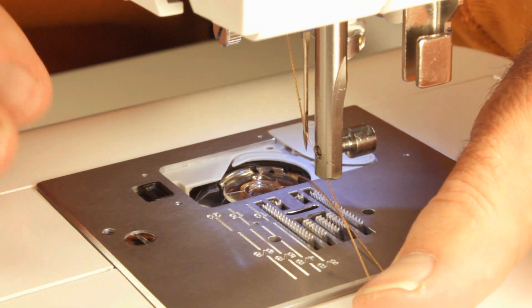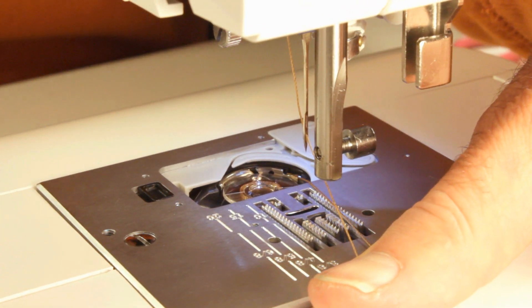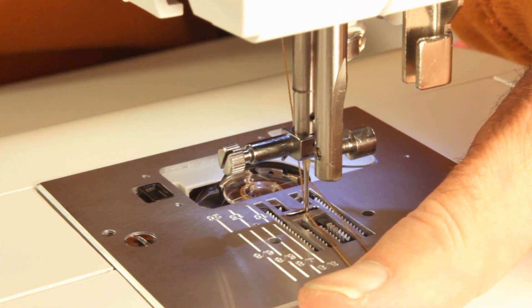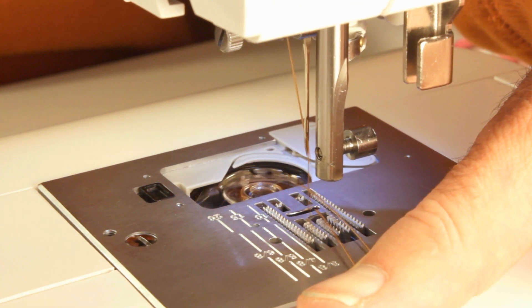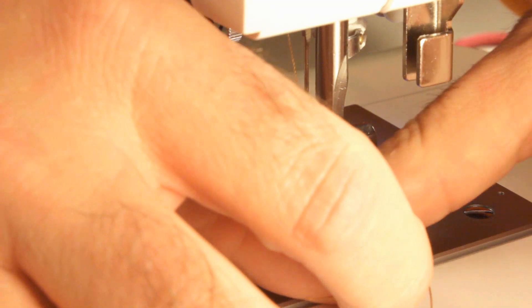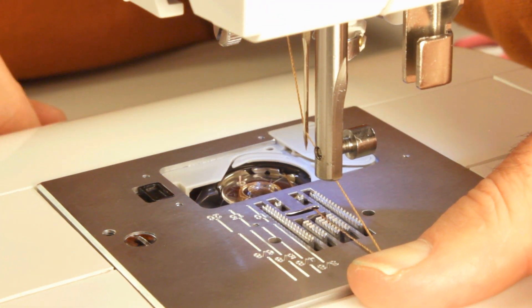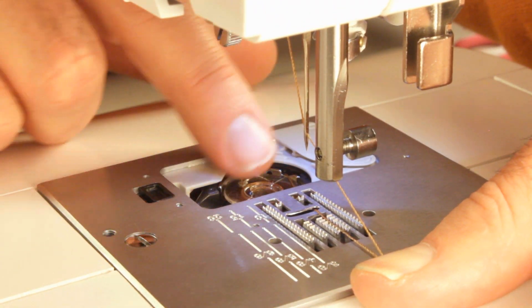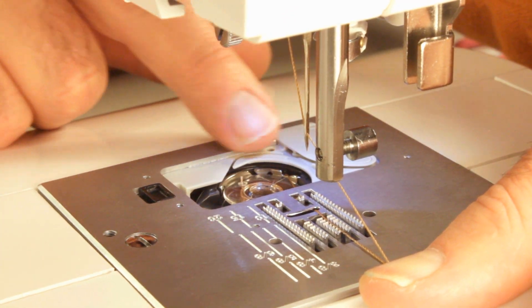Now, if we go ahead and go down with our needle and hold our threads, pull around, pull our bobbin thread up through. Now it is correct. You'll get a good tension. Your stitch will have good tension when it's that way.